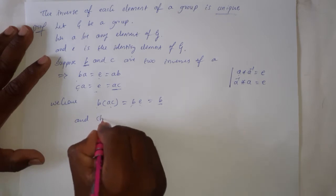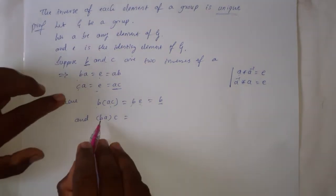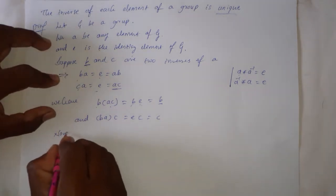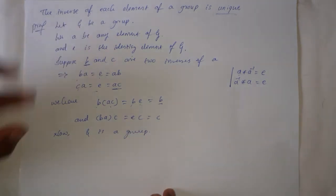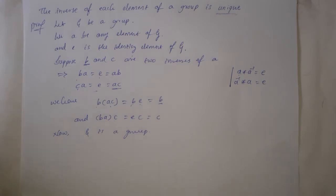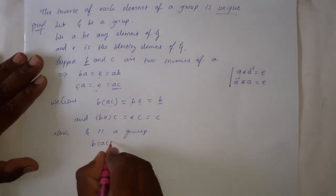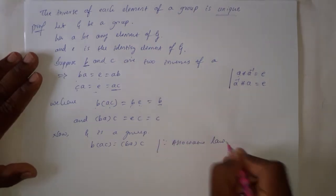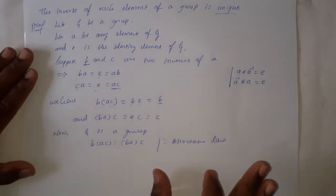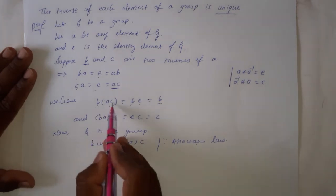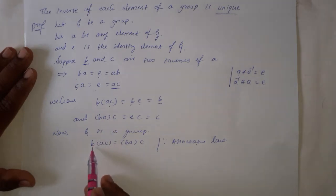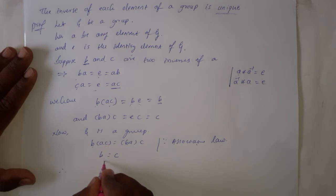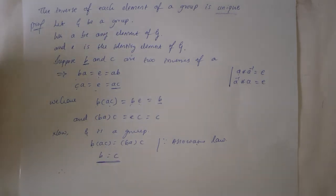Then consider (ba)c: ba = e, so (ba)c = e · c = c. Now since G is a group, it must satisfy the associative property. Therefore b(ac) = (ba)c. We have already shown b(ac) = b and (ba)c = c. So therefore b = c. Since b and c are equal, it means the inverse of each element is unique.